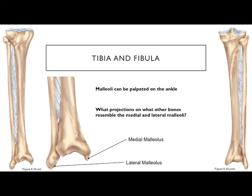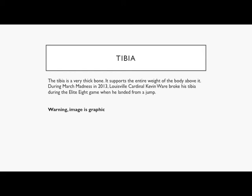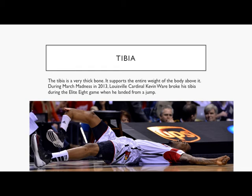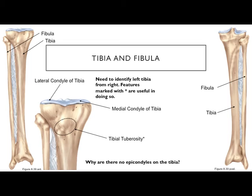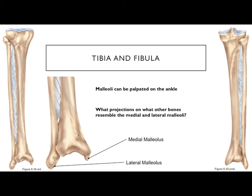Moving distally on the tibia, there's a projection called the medial malleolus — you can feel this bump on the inner side of your ankle. On the fibula, there is a lateral malleolus — all you need to know about the fibula. The lateral malleolus projects out on the outer portion of the ankle.